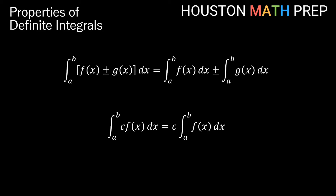For definite integrals, we have two properties that are the same as indefinite integrals. If we have two functions being added or subtracted, we can take the integral of the first and add or subtract the integral of the second — this works for definite integrals on interval a to b as well. Also, a constant multiple of a function basically stretches it that many times taller, so it has that multiple of area underneath its graph, and we can factor out the constant.